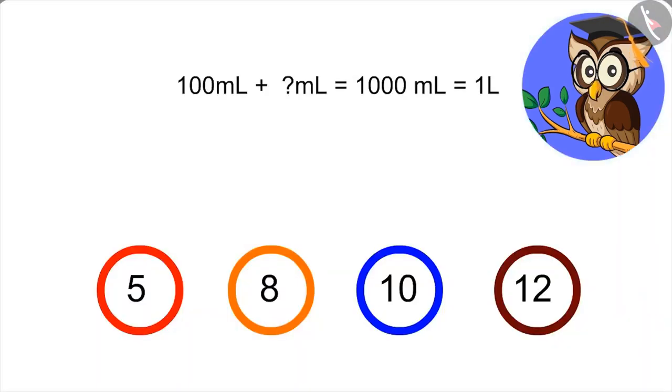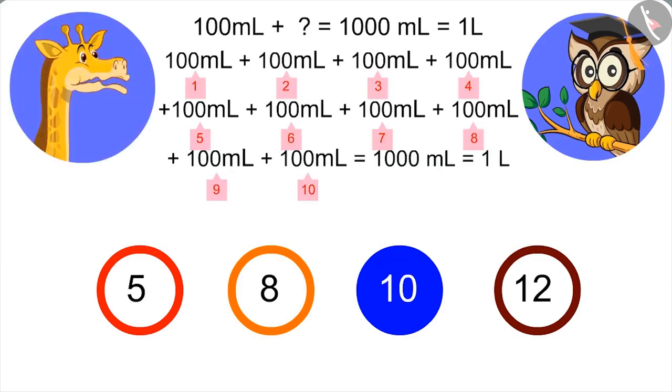Now, tell, how many 100 ml will add up to 1 liter? Adding 100 ml up to 10 times makes 1,000 ml, means 10 multiplied by 100 ml gives 1 liter.